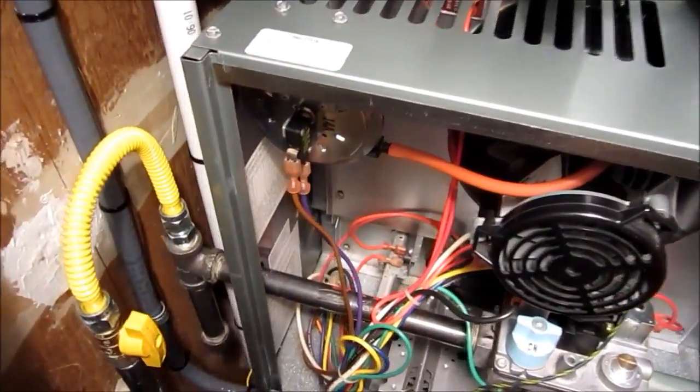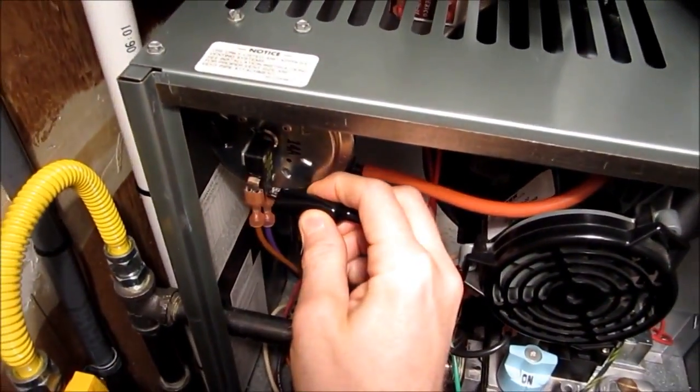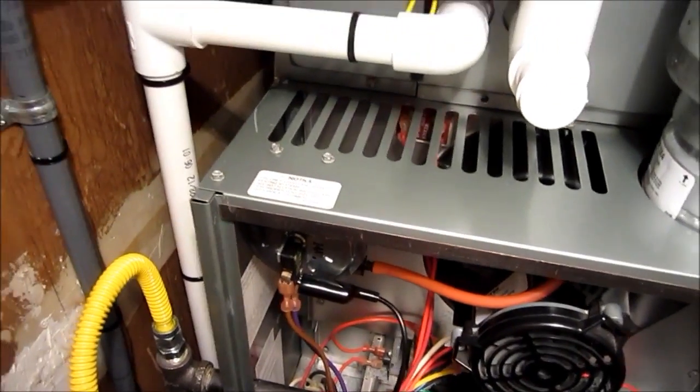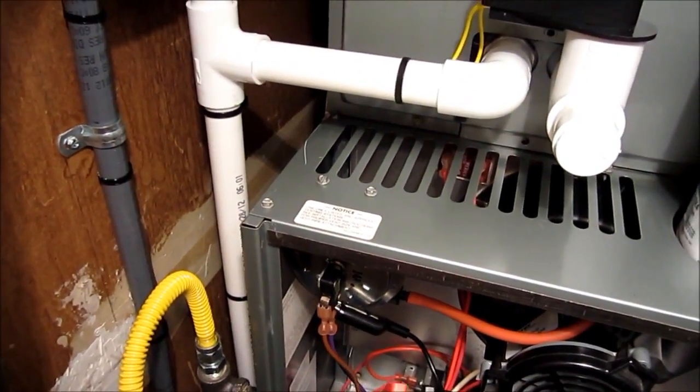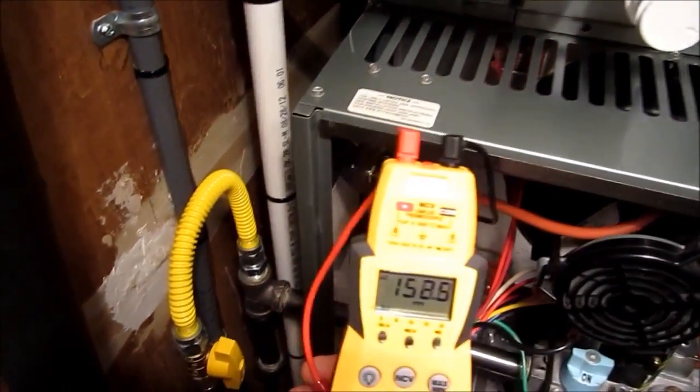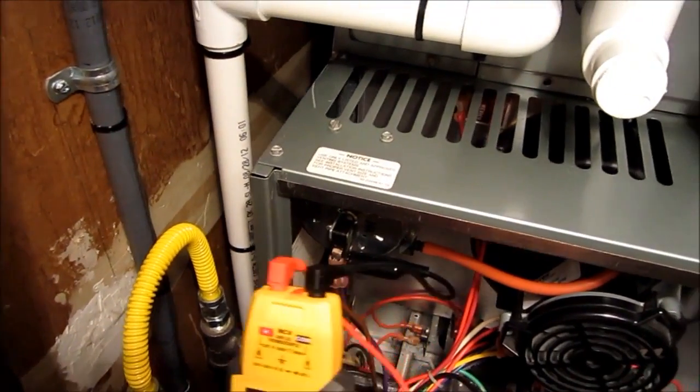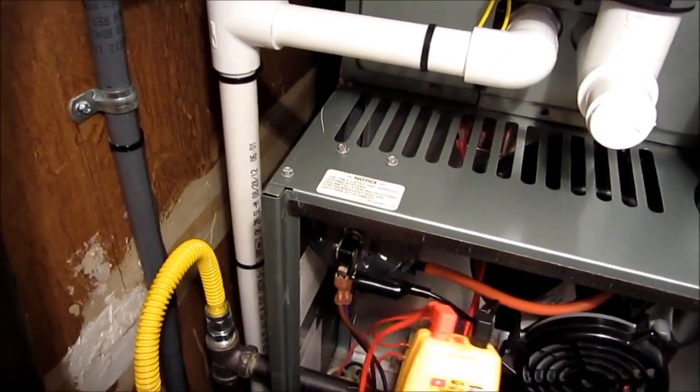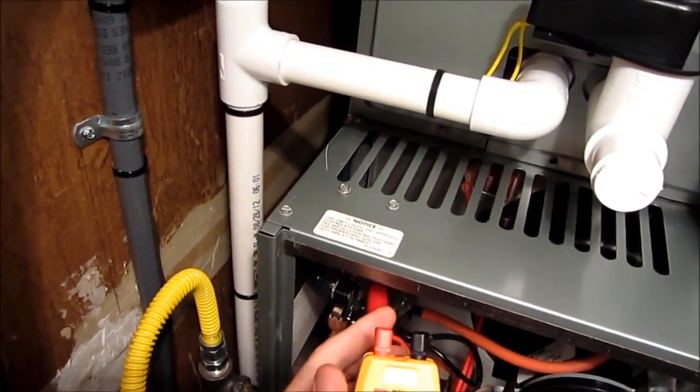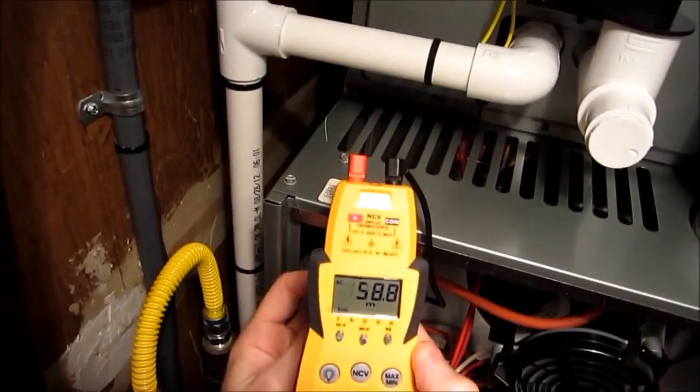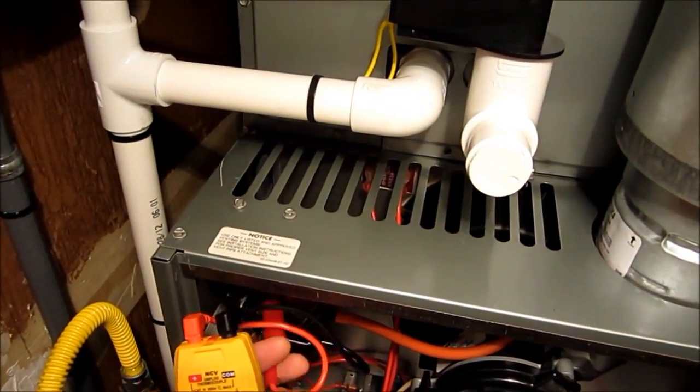Go ahead and take one of your alligator clips and hook it to the back terminal. There you go. Now we're going to take that other alligator clip and ground it to the body of the pressure switch itself. Sergeant, do you got it set to volts? Yes, I do. Okay, all right. Now let's go ahead and fire it.